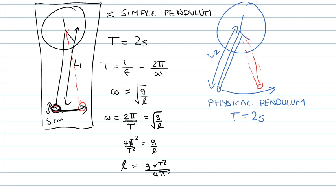And what we can do then is put in our numbers. So g is 9.8. Our period was two seconds. So that's times four, which gives us the answer for l as 0.993 metres.